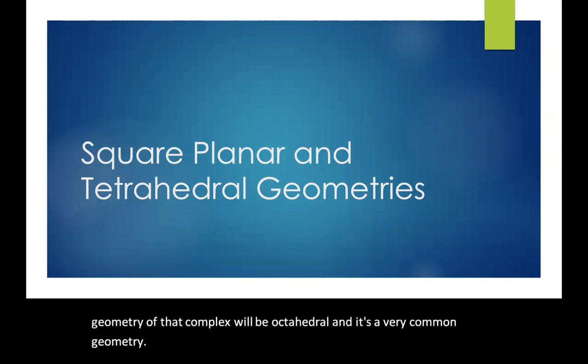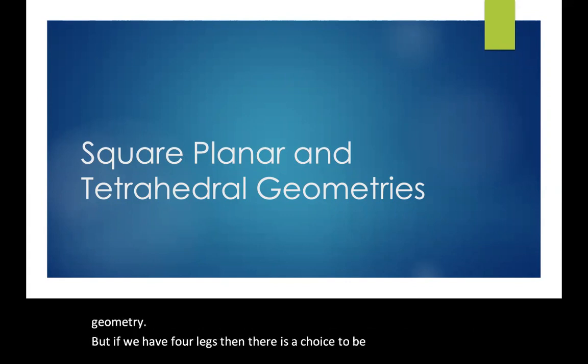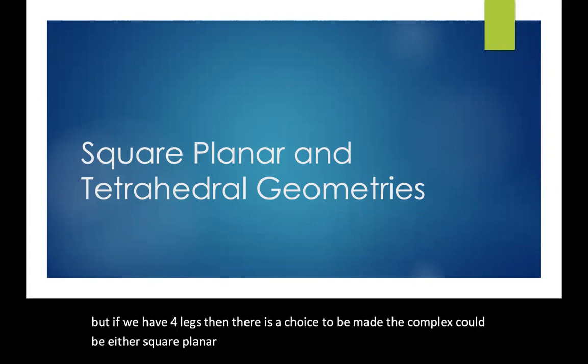But if we have four ligands, then there is a choice to be made. The complex could be either square planar or tetrahedral. So we'll take a look at some of the reasons complexes will go one way or the other.